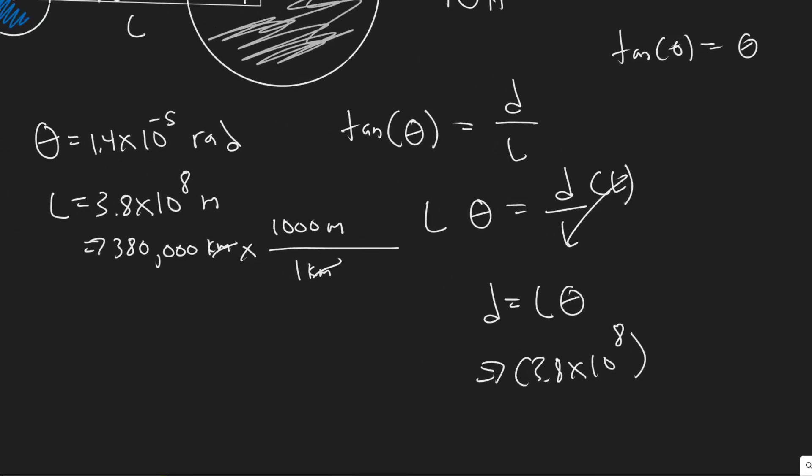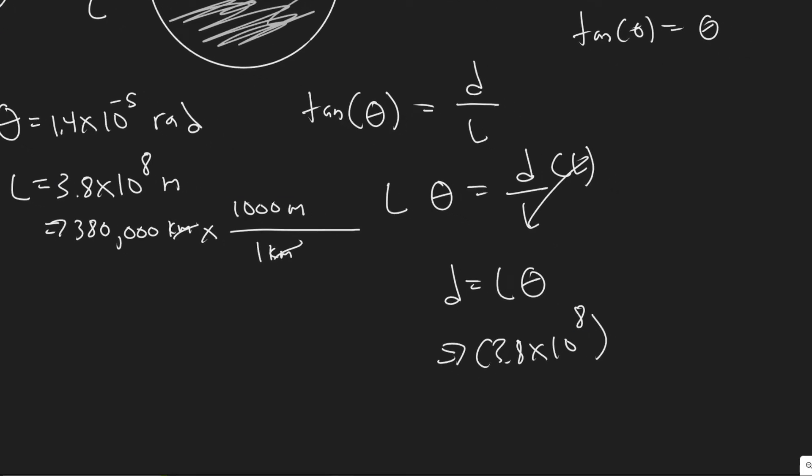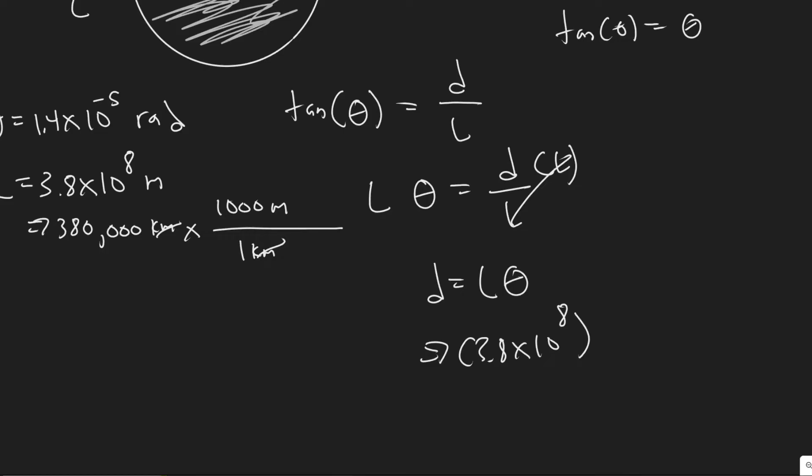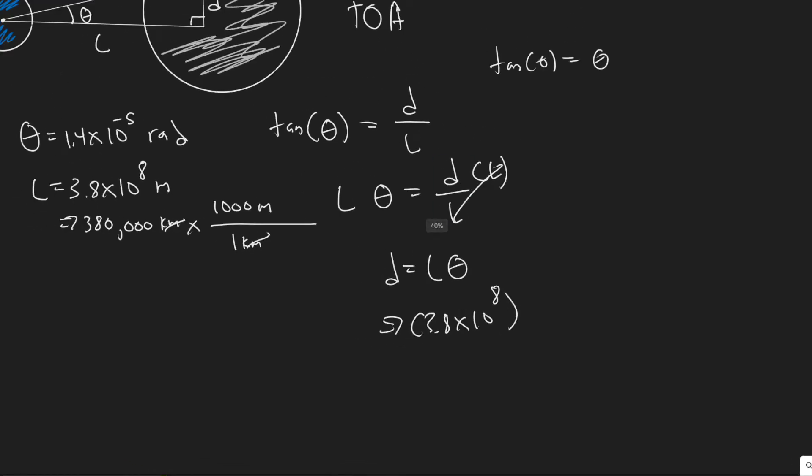And then theta, we want to leave in radians, because radians is essentially unitless. So our answer is going to be in meters, which is what we want. So 1.4 times 10 to the minus 5 is our angle theta now. And then it's really just a matter of plugging it in. So 3.8 times 10 to the 8 times 1.4 times 10 to the minus 5, that'll give you a value or a diameter of 5,320.